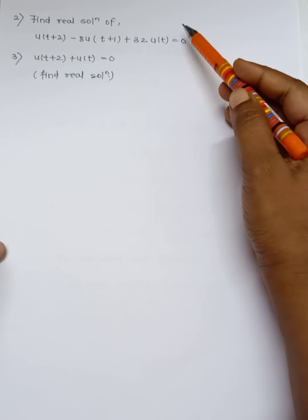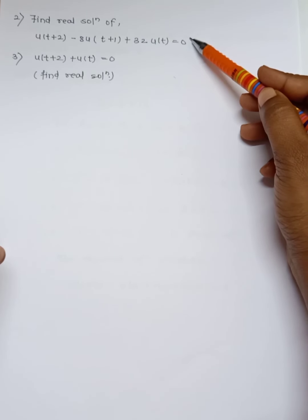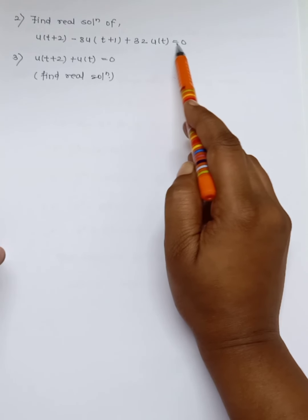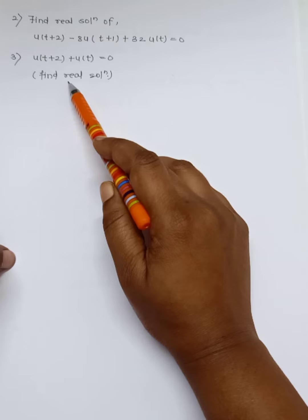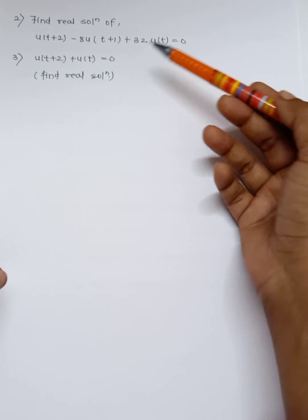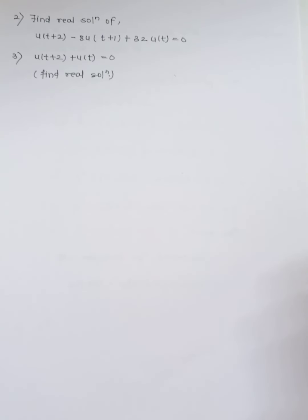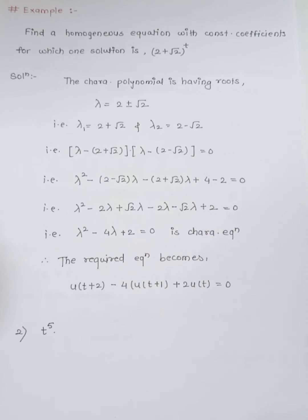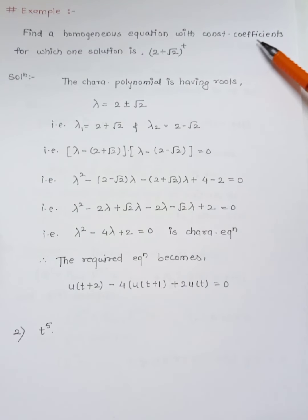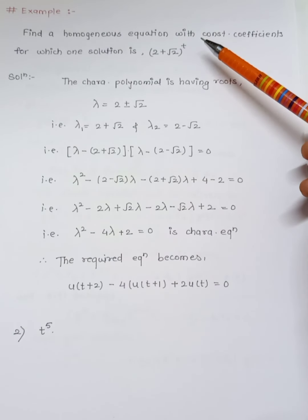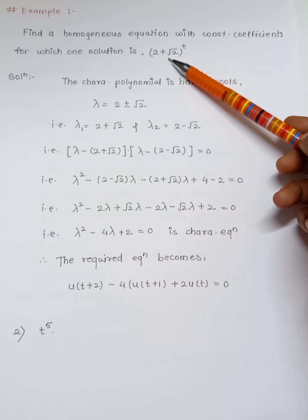In the same way, you need to find the real solution for two practice problems: the first is u(t+2) - 8u(t+1) + 32u(t) = 0, and the second is u(t+2) + u(t) = 0. These are homework examples. Additionally, we will solve one more example now.